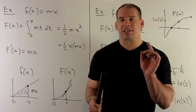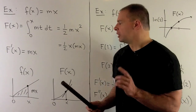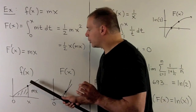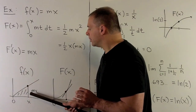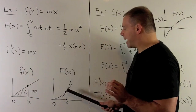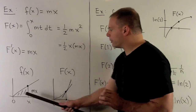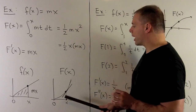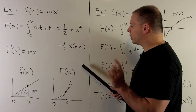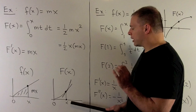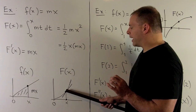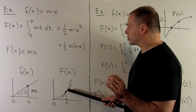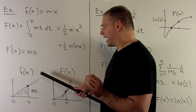To recall what's happening in pictures: to go from little f to capital F at x, we take the area under the graph, and that gives us the value of capital F. So we're going from a straight line to a parabola — from mx to one-half mx squared. If we want to go in the other direction, we take our point x, find the point on the graph, take the tangent line, and the slope of that tangent line gets us back to our function f of x.